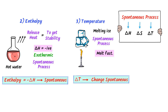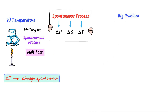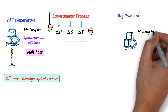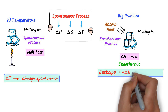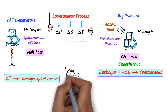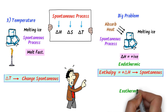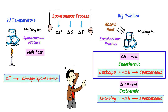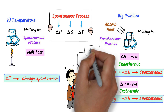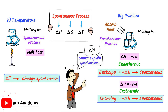Now, here is one big problem. Consider this melting ice. We know that melting ice absorbs heat from the surrounding, and it is an endothermic process. It is also a spontaneous process. For an endothermic process, enthalpy change ΔH is positive. Hence, if ΔH is positive, it is still a spontaneous process. But we already learned that if ΔH is negative, it is a spontaneous process. This is a big problem — ΔH alone cannot show us that a process is spontaneous.